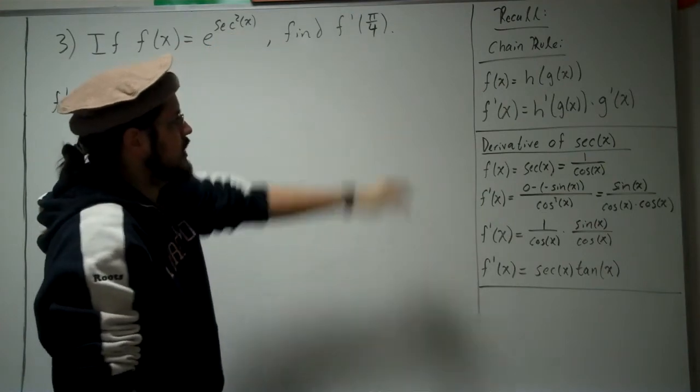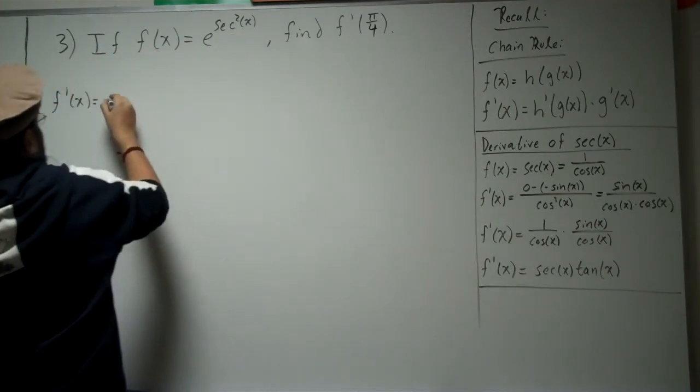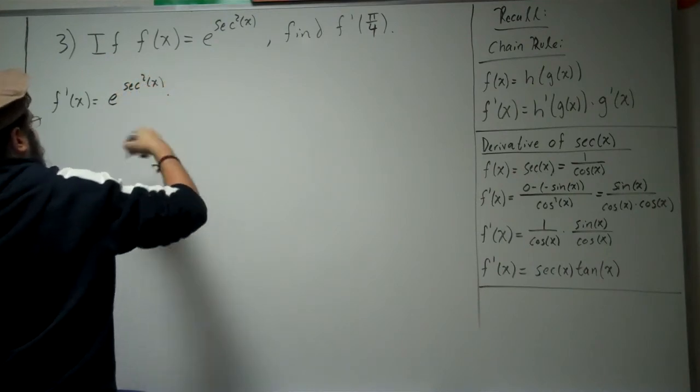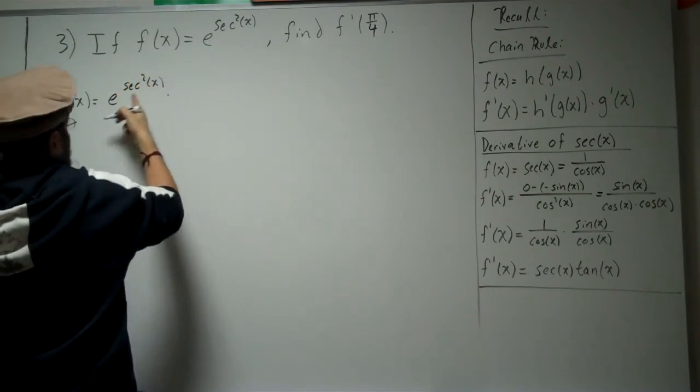So we must use the chain rule. The derivative of this is going to be e to the secant squared x, times the derivative of the inner function, which is secant squared.